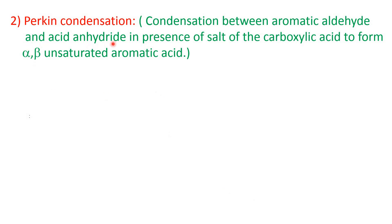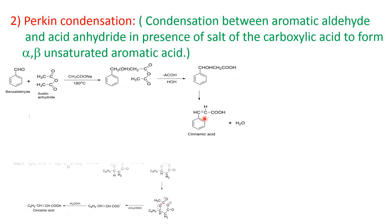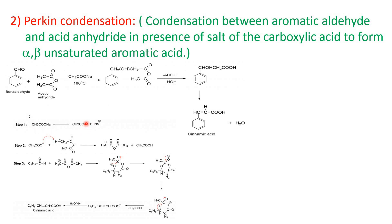Next one is Perkin reaction or Perkin condensation reaction. It is the condensation reaction between aromatic aldehyde and acid anhydride in presence of salt of the carboxylic acid to form alpha-beta unsaturated aromatic acid. Here, this is benzaldehyde and this is acetic anhydride. In presence of sodium acetate, this condensation reaction takes place, whereby cinnamic acid — alpha-beta unsaturated carboxylic acid — is formed. This reaction also proceeds through carbon ion formation: from sodium acetate, acetate ion is formed, which acts as a base and takes this proton and generates this carbon ion. This carbon ion condenses with benzaldehyde and finally forms the alpha-beta unsaturated aromatic carboxylic acid. So this is the end of Riddle number 28. Thank you.